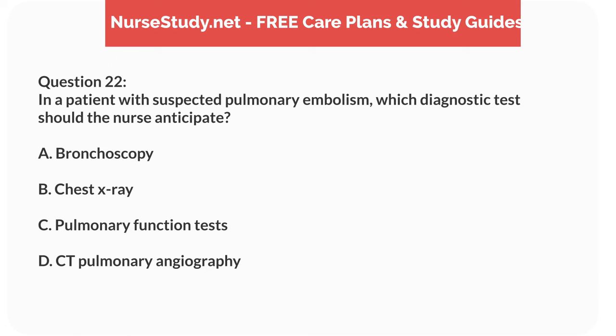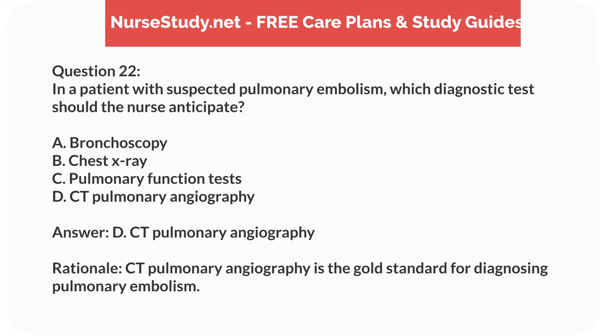Question 22. In a patient with suspected pulmonary embolism, which diagnostic test should the nurse anticipate? A. Bronchoscopy. B. Chest x-ray. C. Pulmonary function tests. D. CT pulmonary angiography. Answer: D. CT pulmonary angiography. Rationale: CT pulmonary angiography is the gold standard for diagnosing pulmonary embolism.